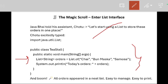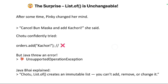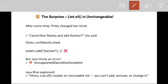So `List<String> orders = List.of(...)` — `List.of()` is used to create a list of elements. He created the list as: `List.of("chai", "bun muska", "samosa")`. When he printed today's orders, he got all the items he added — strings added using the `List.of()` method.